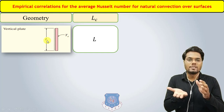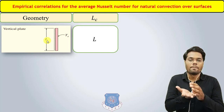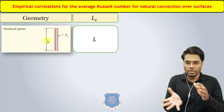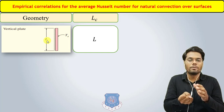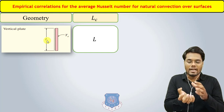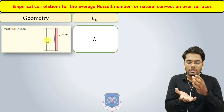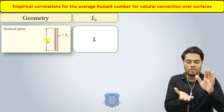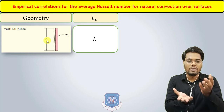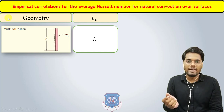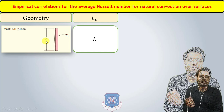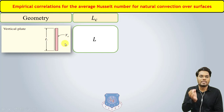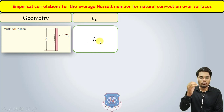Whatever heat transfer by convection takes place, the fluid takes heat from the surface of the plate and after getting the heat, the fluid goes in the upward direction, covering its total height L. So for a vertical plate, the characteristic dimension would be its height, whether denoted as capital H or capital L.